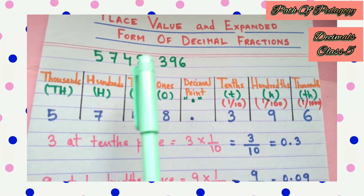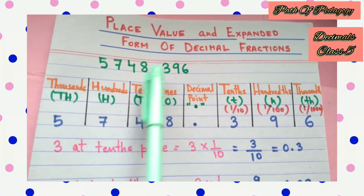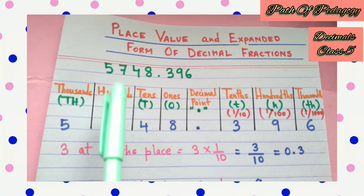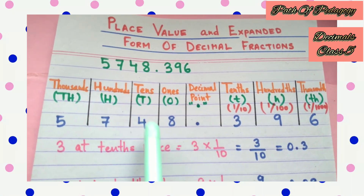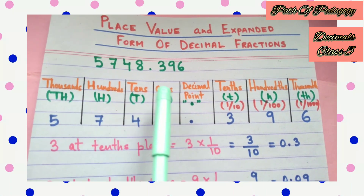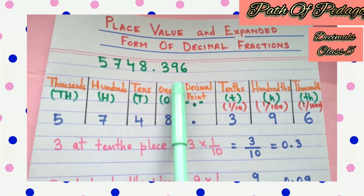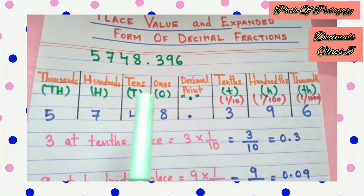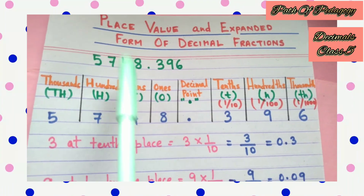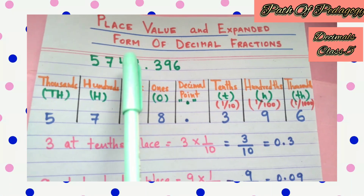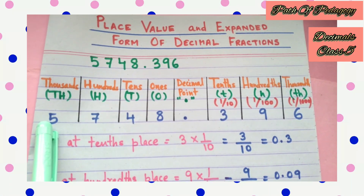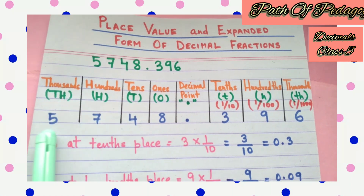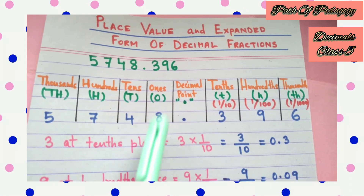As per the Indian place value system, the place values of the whole number 5748 are: ones, tens, hundreds, and thousands. Starting from the right hand side, write O for ones, T for tens, H for hundreds, and TH for thousands. Now put the digits under each place value: under ones is 8, under tens is 4, under hundreds is 7, and under thousands is 5. This is how we write the whole number according to the Indian place value system.